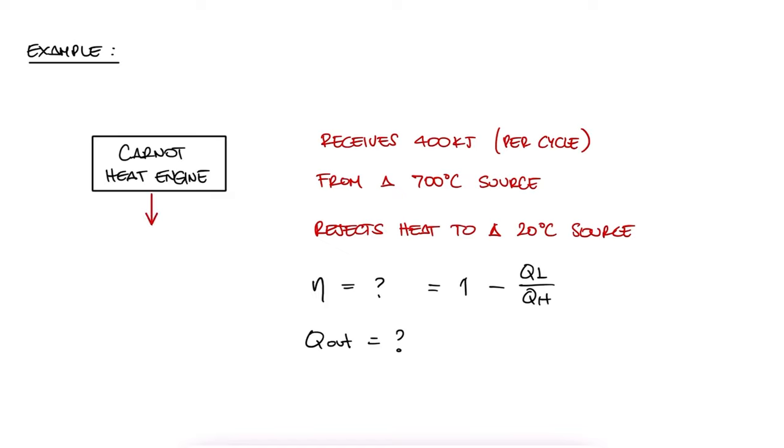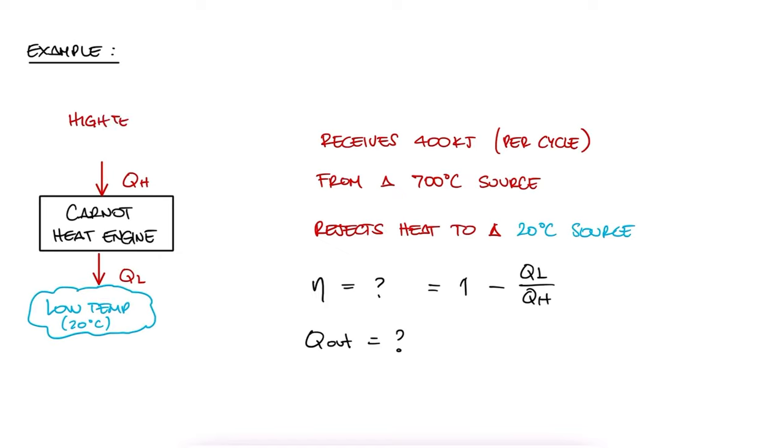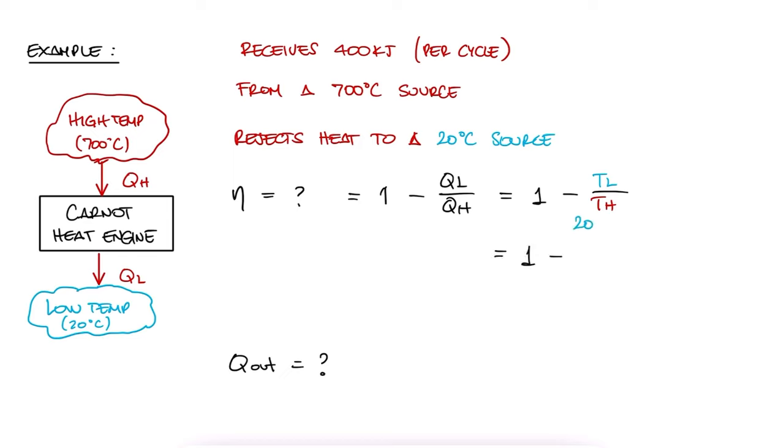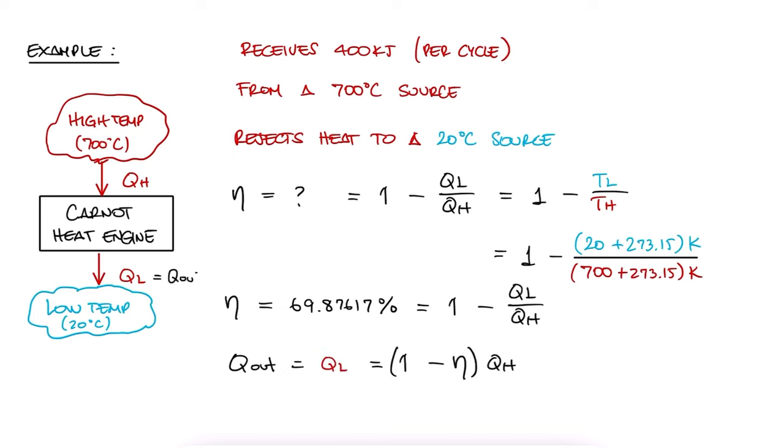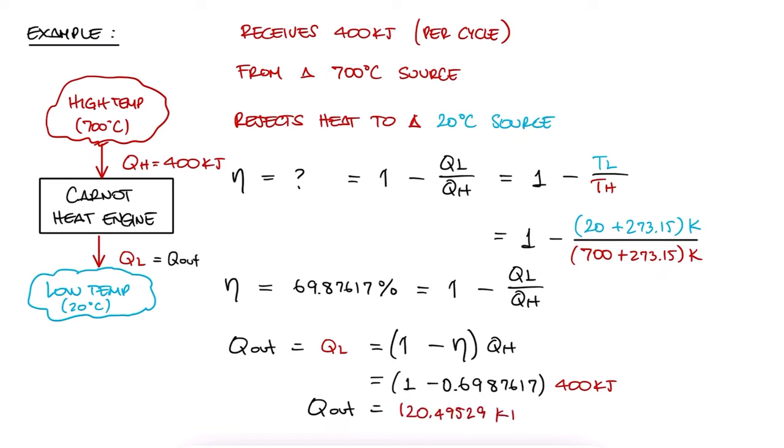Well, we learned today that the efficiency of a heat engine, which used to be 1 minus QL over QH, can be written in terms of TL and TH when it's a reversible heat engine, or a Carnot heat engine. Since we have the temperatures, we substitute their values, and always remember to substitute temperature values in Kelvin, because that is the absolute temperature, not a shifted one like Celsius is, and we find the efficiency to be 69.9%. And since this is still equal to the efficiency in terms of heats, we solve for the heat out, our second question here, and substitute the heat in of 400 kJ to find that the heat out is 120.5 kJ.